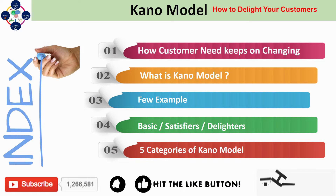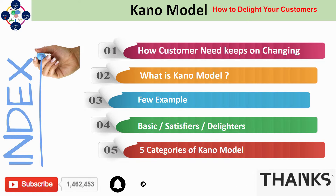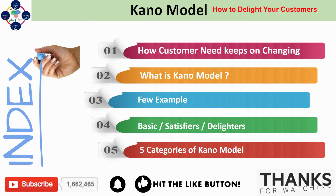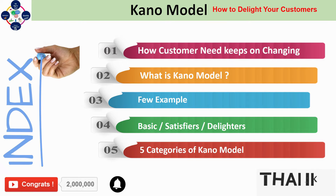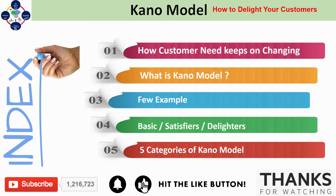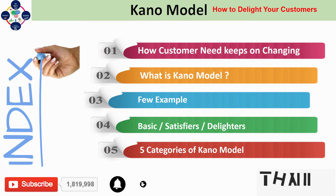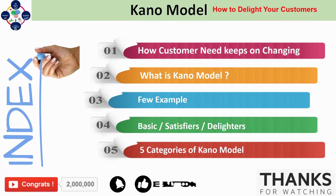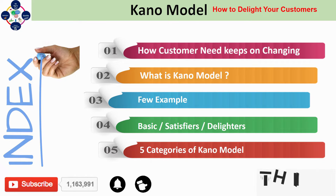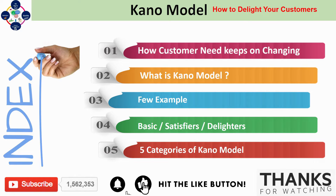In this video we're going to talk about how customer needs keep changing over time. We'll discuss what the Kano Model is in brief, look at a few examples, examine basic, satisfier, and delight attributes in more detail, and finally cover the five categories of the Kano Model.